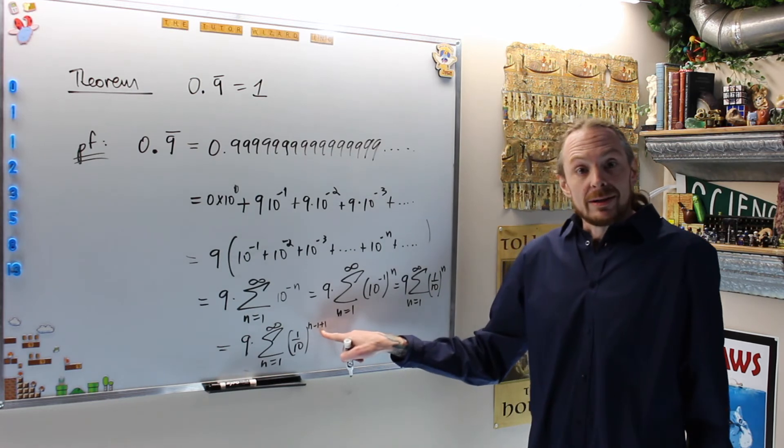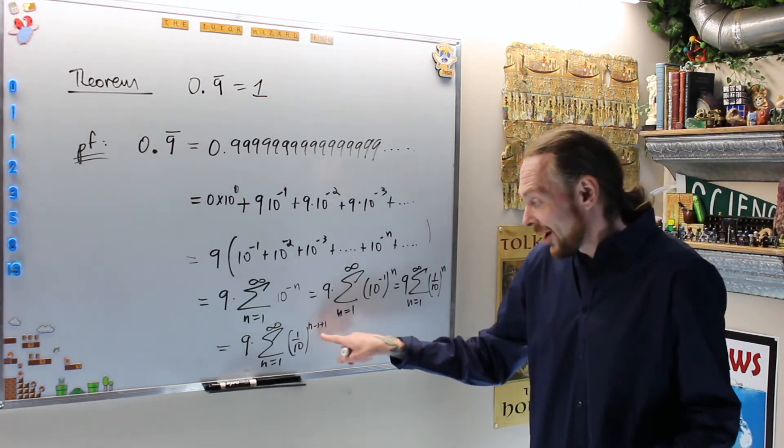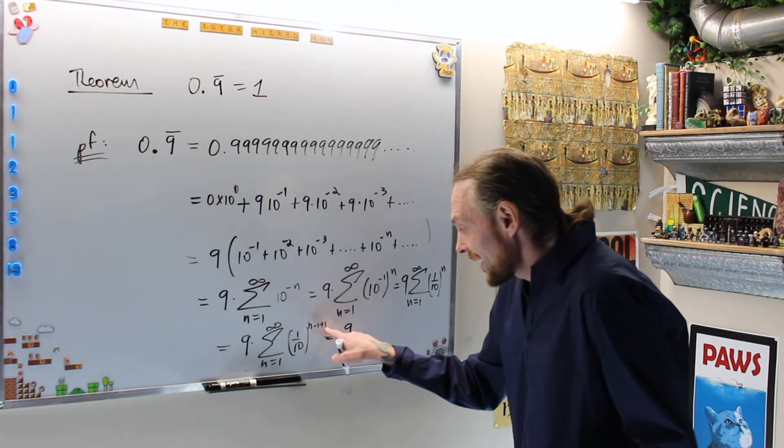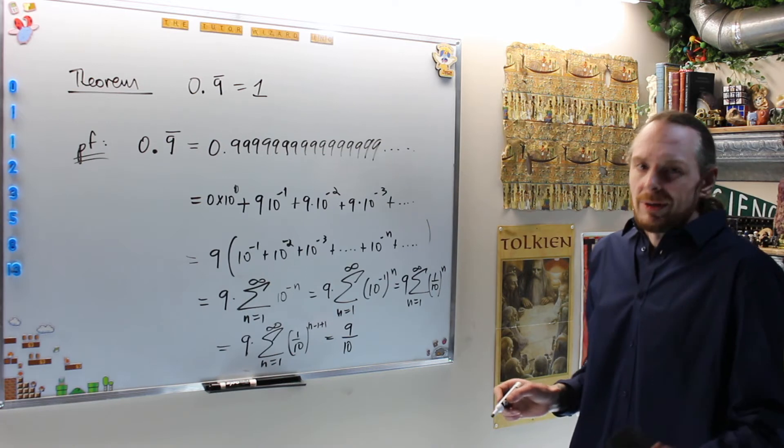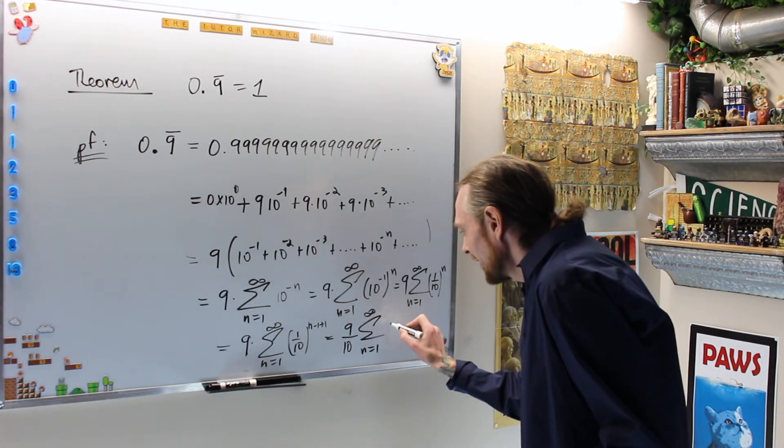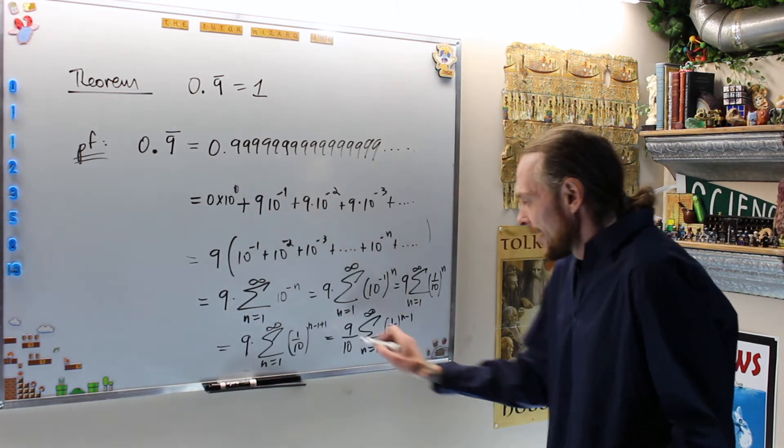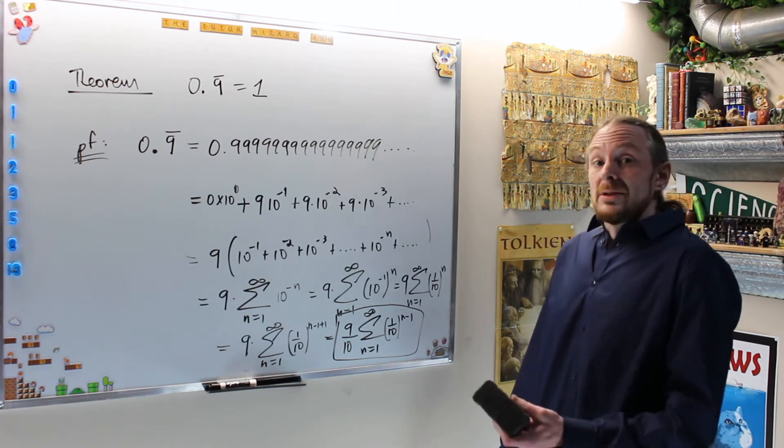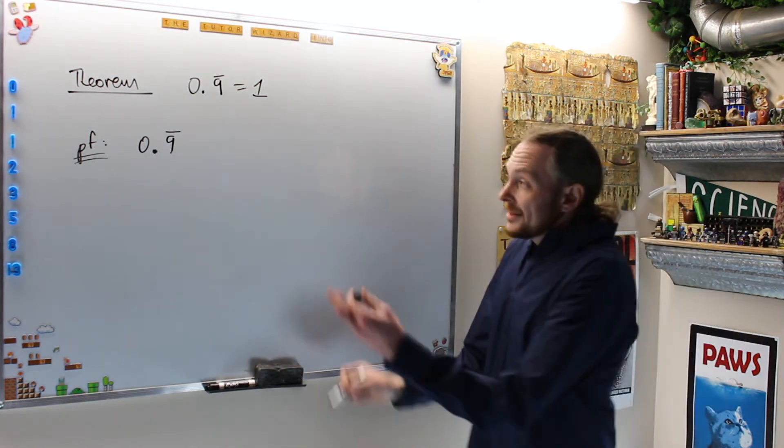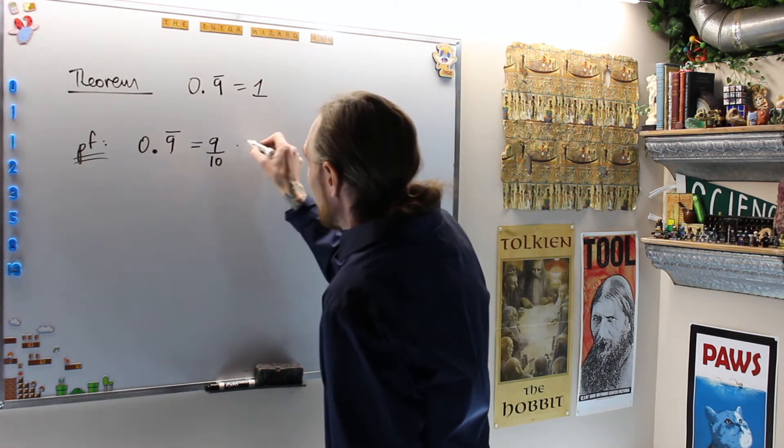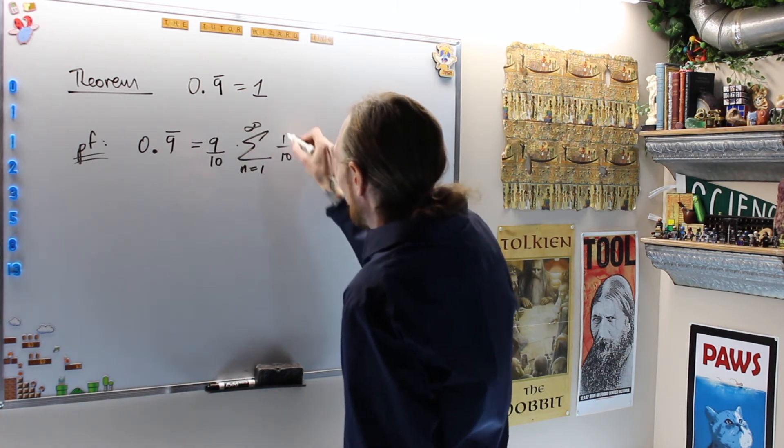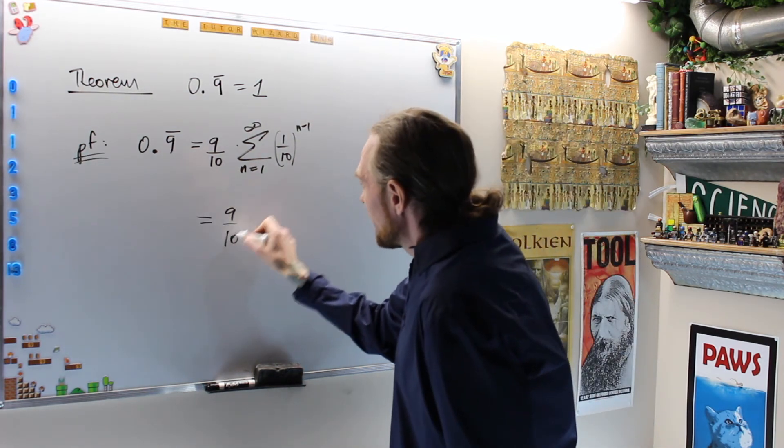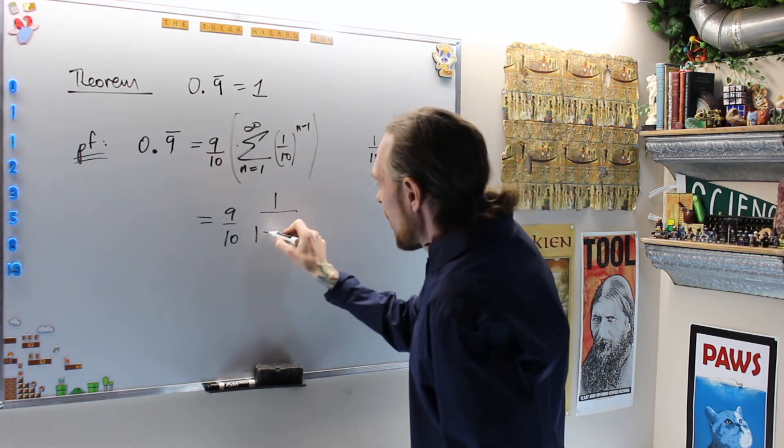This equals 9 times the sum from n=1 to infinity of (1/10)^(n-1+1). I've added 0 in the exponent. Now I want this one, so I'm going to use the other exponent law: sum in the exponent is product in the basis. I'm going to take a 1/10 off. This equals (9/10) times the sum from n=1 to infinity of (1/10)^(n-1). This guy I claim is now going to equal 1 using the geometric series convergence formula.